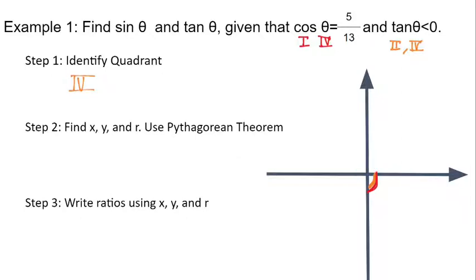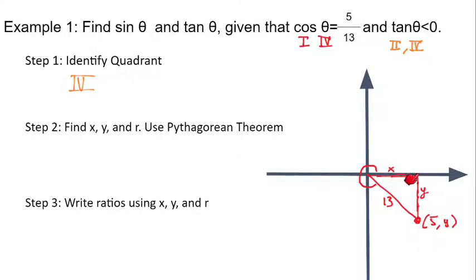So we'll draw this relationship in quadrant 4. We have some angle down in quadrant 4 where x is 5. We don't know the y-coordinate, but we know the radius is 13. Think of it like a right triangle: horizontal distance x is 5, we don't know the vertical distance y, and the radius is 13. We know x and r, so we need to find y using the Pythagorean theorem.